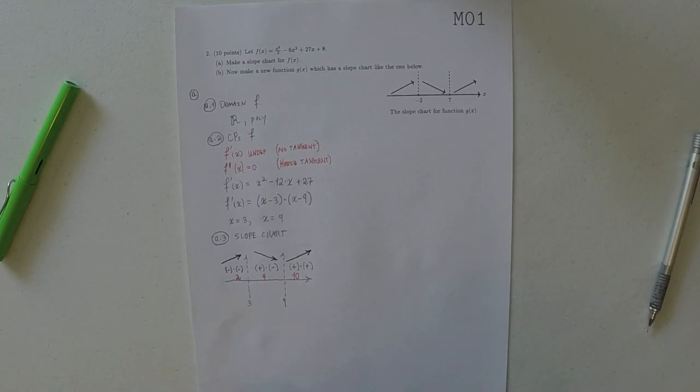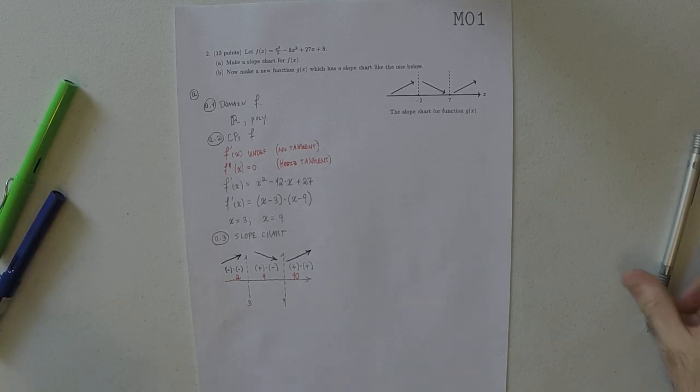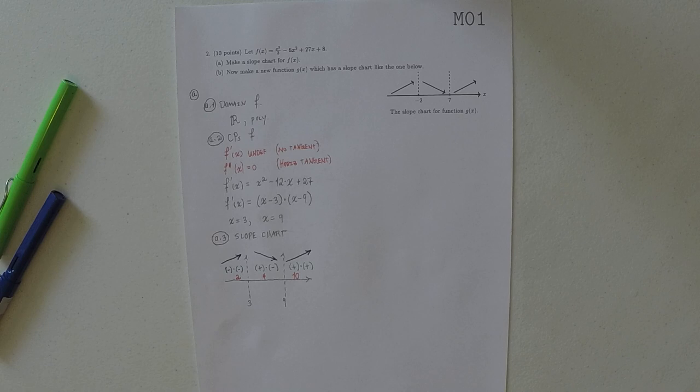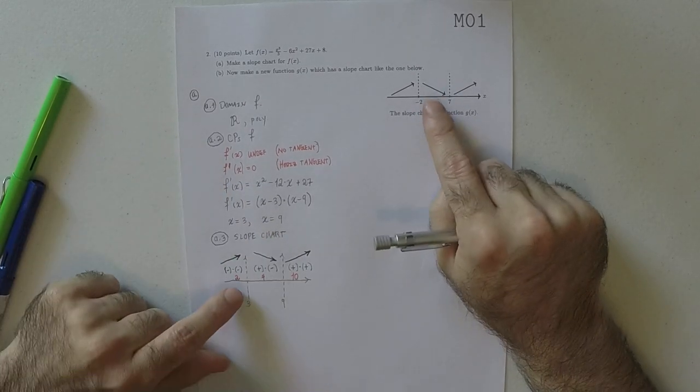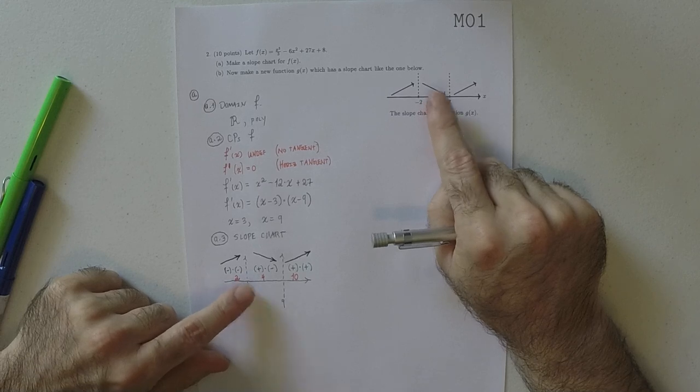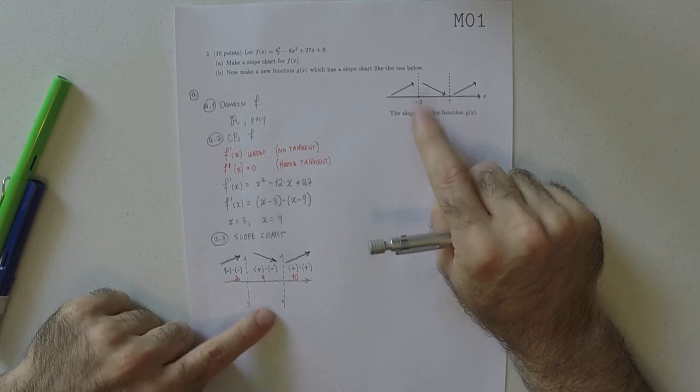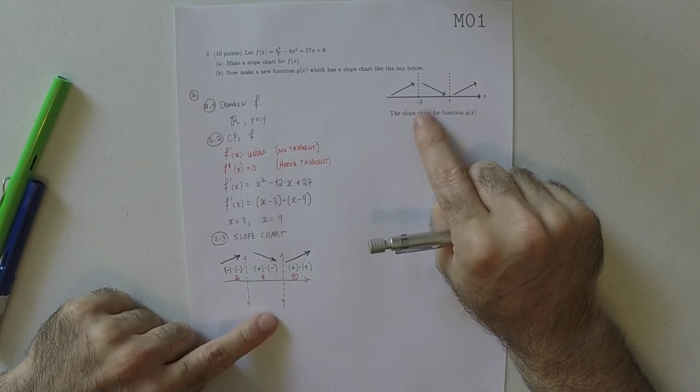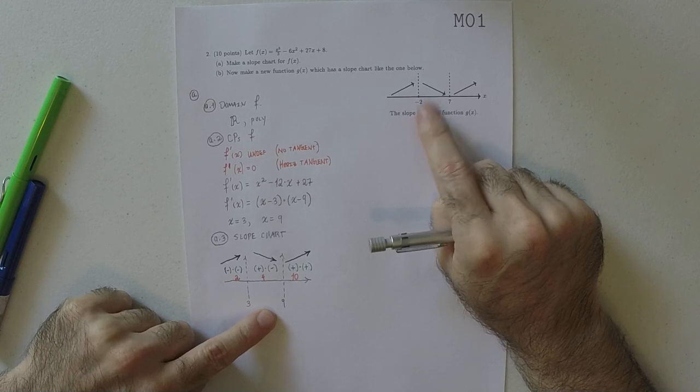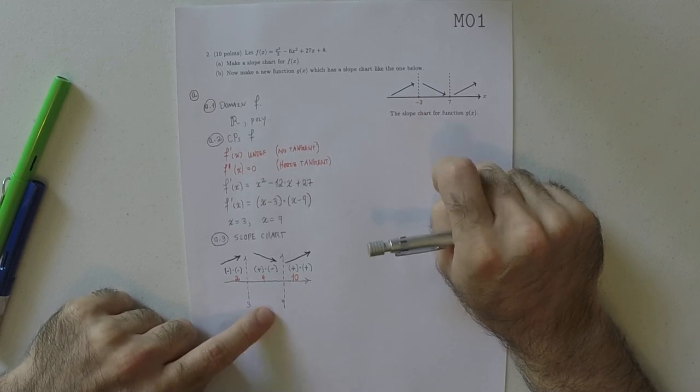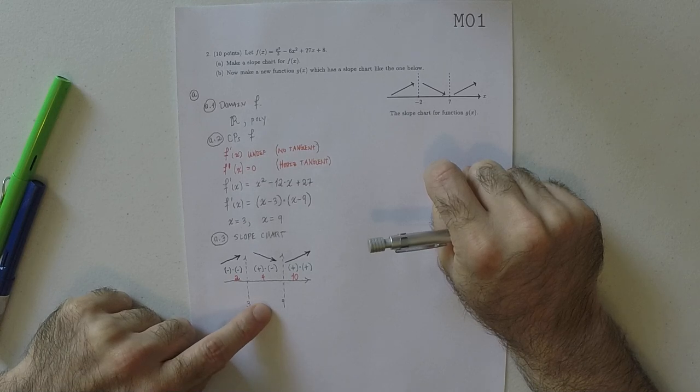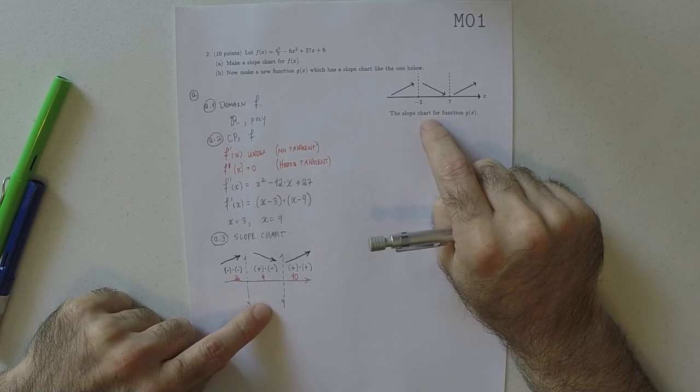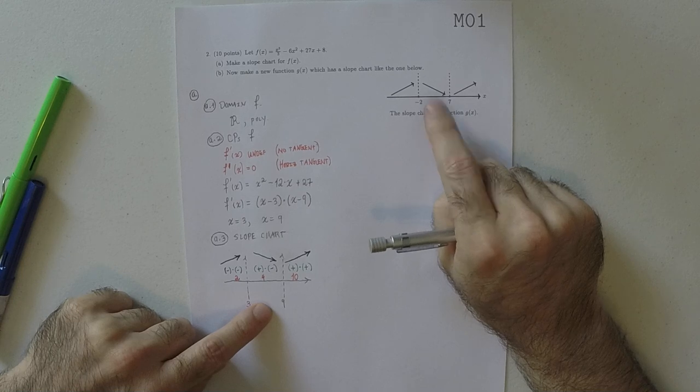Alright, so that's the answer to part A. Okay, now here's the main idea. The point of the question is for you to look at these two, and come to the understanding that this is what the chart of function f looks like, and you're supposed to make a function that has a chart that looks like this.